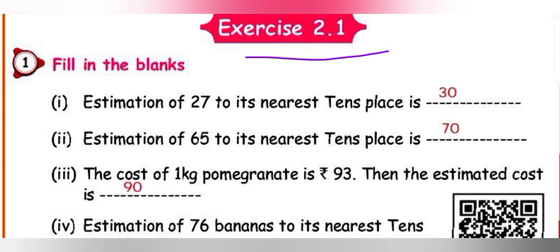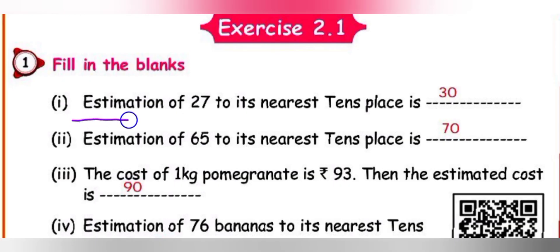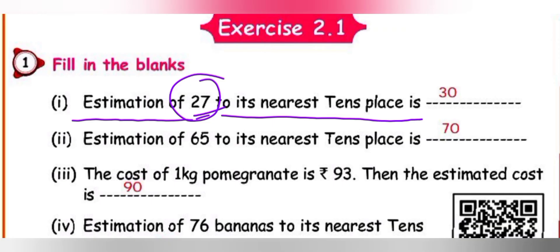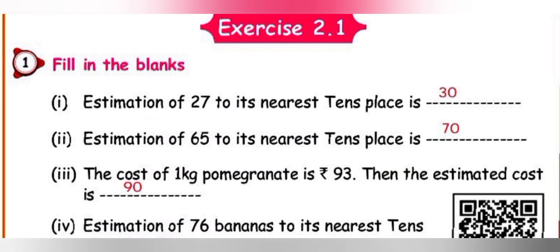Exercise 2.1 — Fill in the blanks. First: Estimation of 27 to its nearest tens place. Ones place is 7, which is more than 5, so 2 tens becomes 3 tens. Therefore 27 estimated to the nearest tens place is 30.